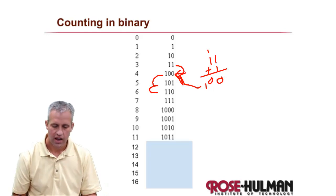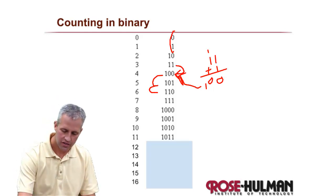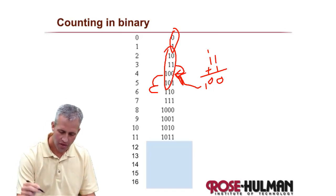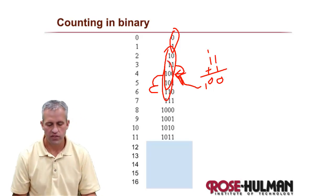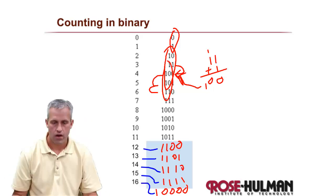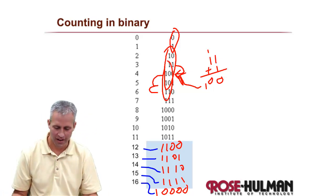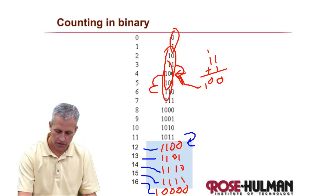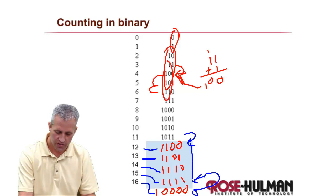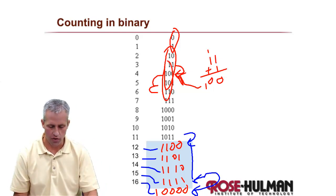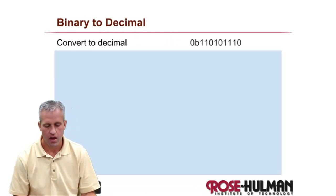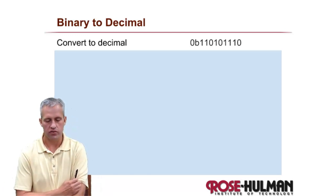As you count, binary forms an elegant pattern. The rightmost column toggles every time, the next column every two, the next every four. See if you can fill in the last couple of values. So 12 is 1100, and 15 is four ones. For 16 you need an additional bit position. It's easy to count in binary once you see that nice pattern.